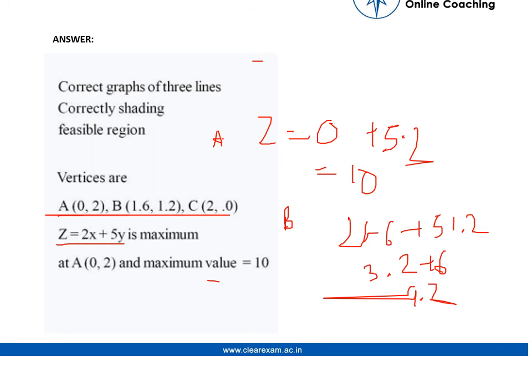Similarly for C, it is z equals to 2 into 2 which is 4 and 5 into 0 which is 0. So for value of A, z is 10, for B it is 9.2 and for C it is 4.